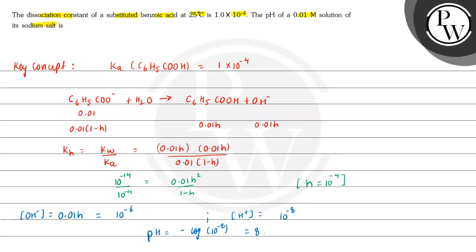So the pH of the 0.01 molar solution of the sodium salt of the substituted benzoic acid is 8. I hope you understood the explanation — all the best!